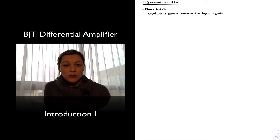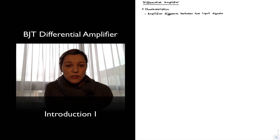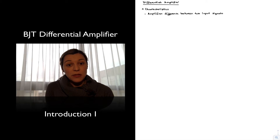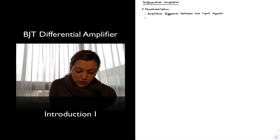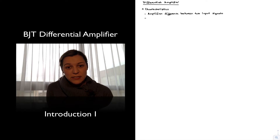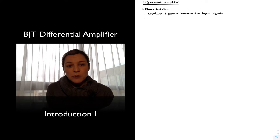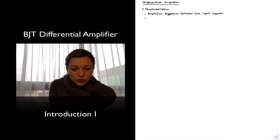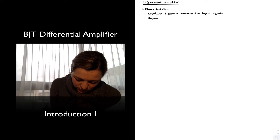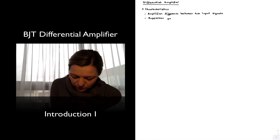Sometimes we also refer to this as it amplifies the differential input signal, because the idea is that the input signal itself will be the difference between the signal applied to both inputs of the amplifier. Because it is supposed to amplify just the differential part of the signal, if operating properly, the amplifier will suppress any part of the signal that is common to both inputs — so it suppresses or eliminates the part of the signal that is common to both inputs.